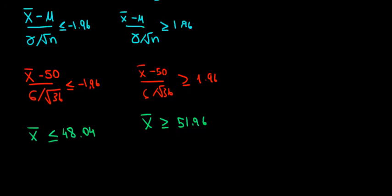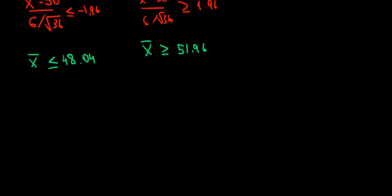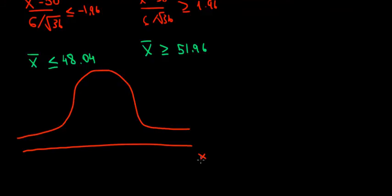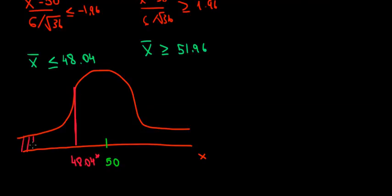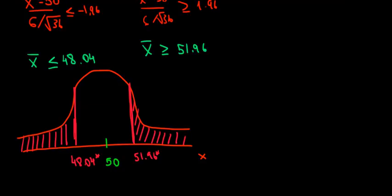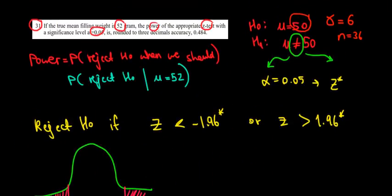If we draw this on a normal distribution for the filling weight X, assuming the population mean is 50, the rejection regions are to the left of 48.04 and to the right of 51.96. Now recall that we want to find the probability of landing in these rejection regions given that the actual mean is 52 grams — not 50 — and we'll continue with that in the next video.